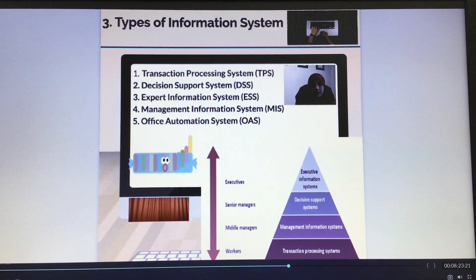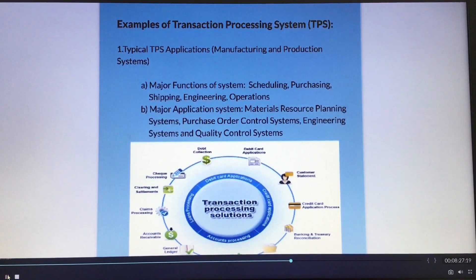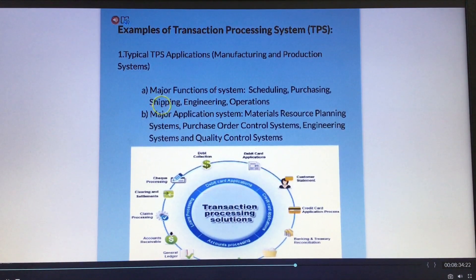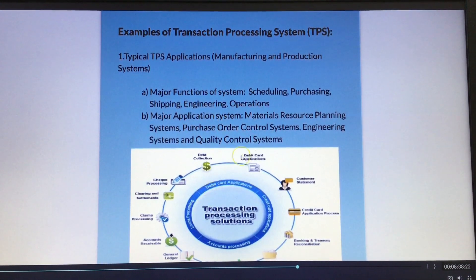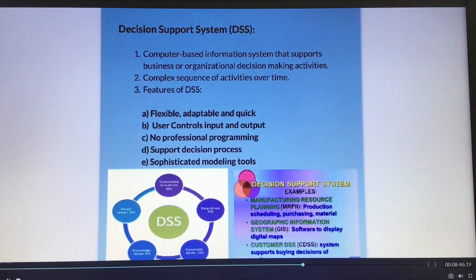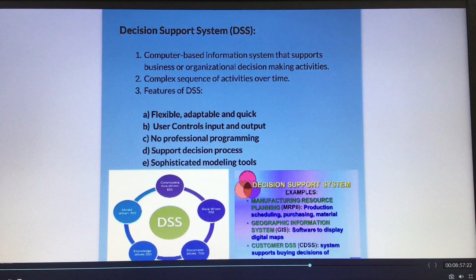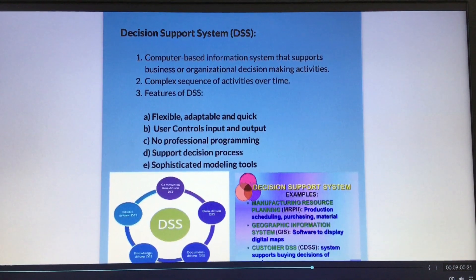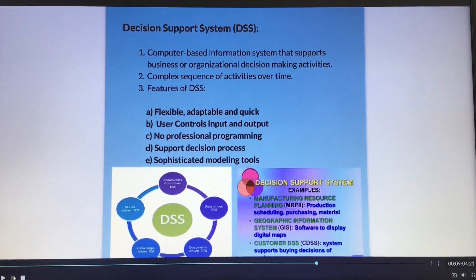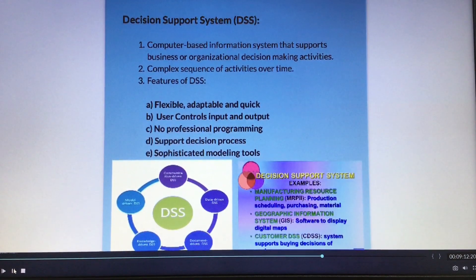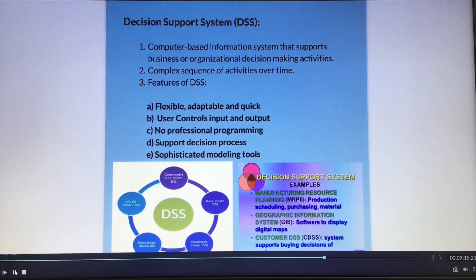As an educator, I can share examples of the transaction processing system, which has a major function as an application system. Students can look at this transaction processing solution. Next, the decision support system (DSS) encompasses features like flexibility, adaptability, quick response, no specific controls for input and output, no professional programming required, support for the decision process, and sophisticated modeling tools. DSS is important because it supports business and organizational decision-making activities.